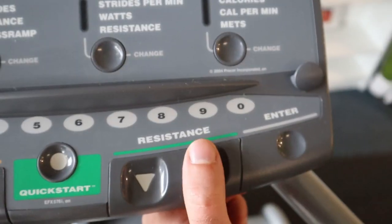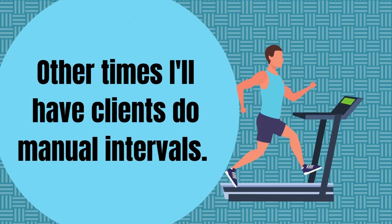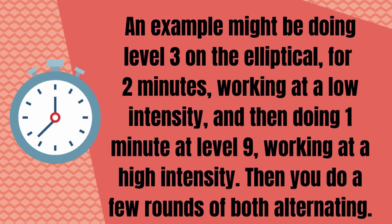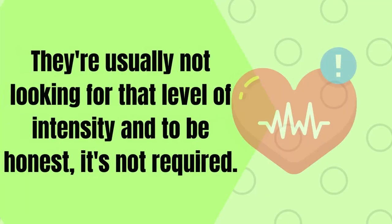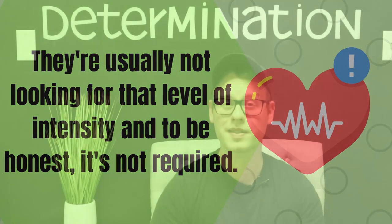I take a similar approach to cardio on the elliptical or bike: start easy and slowly increase the challenge level over time. Sometimes I'll use preset programs on ellipticals and increase the challenge level over time there as well. Other times I'll have clients do manual intervals — for example, level three on the elliptical for two minutes at low intensity, then one minute at level nine at high intensity, repeated for a few rounds. Something like this falls under the HIIT umbrella. I don't have too many clients do HIIT — it's not shown to be drastically more effective for weight loss, and it's not very practical with most average deconditioned clients. That said, if a client wants to try high intensity interval training, I don't think that's a bad thing — just help them do it safely.